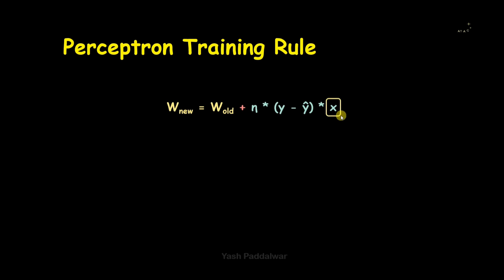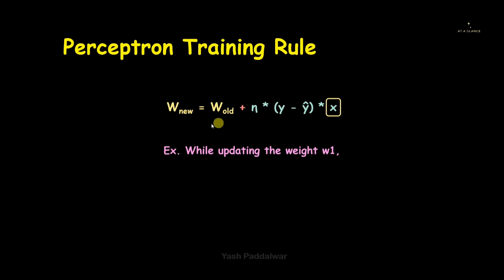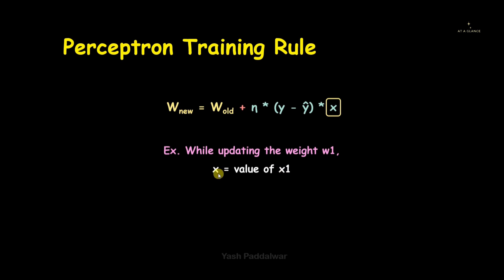Now for the term x, which represents the features. We can have multiple features: x1, x2, x3, and so on. If we want to update weight w1 then instead of x we write x1. If we are updating weight w2 then x is replaced by x2.